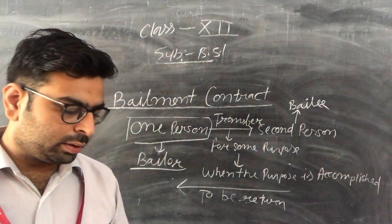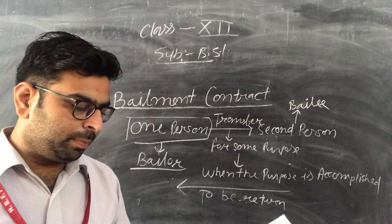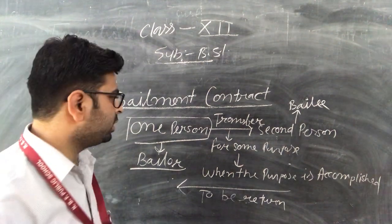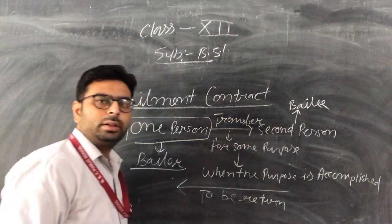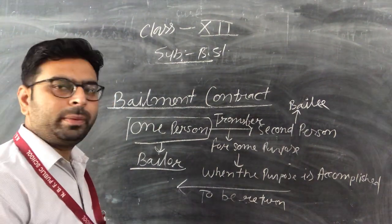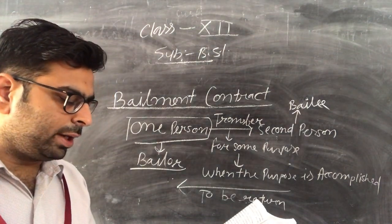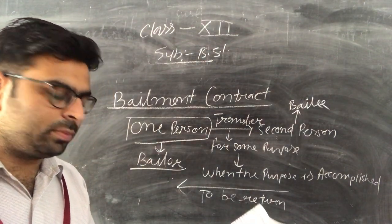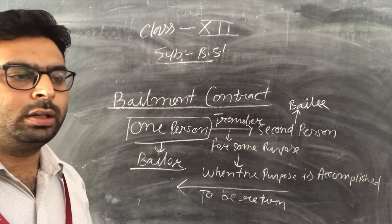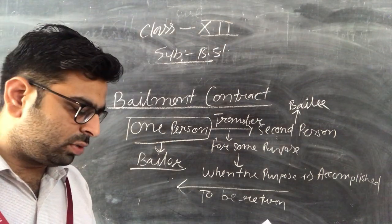There are two types of bailment contract: gratuitous and non-gratuitous. Gratuitous bailment means bailment without any charge or reward — for example, a person who transfers his goods for a short time with no payment involved. Non-gratuitous bailment means bailment for some charge or reward. For example, if you put something in a bank locker, the bank charges a fee — that is non-gratuitous bailment.